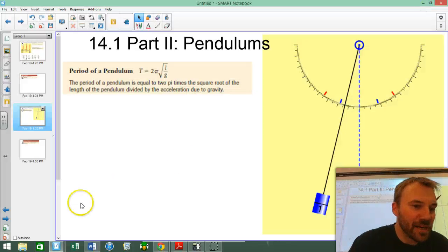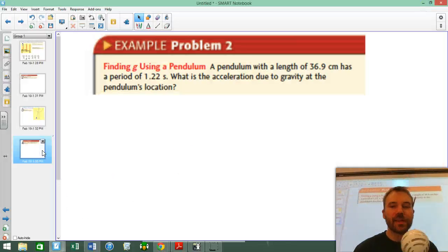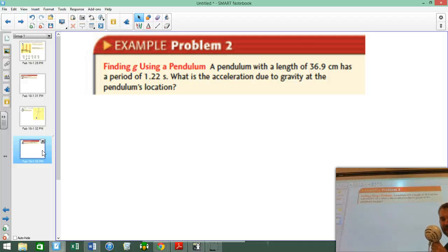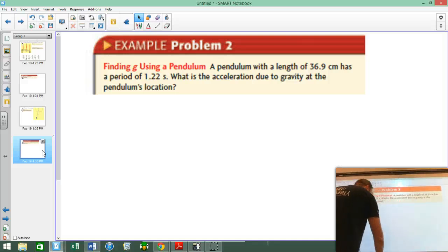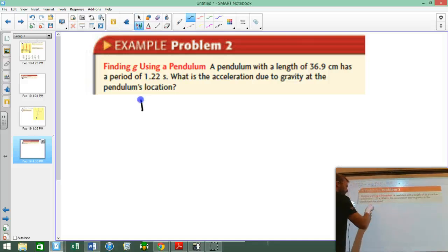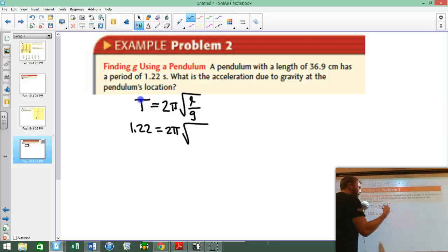It continues to do... I'll leave a link to this if you want to watch any more of it. But let's do the problem that we've got here. Problem says, you've got a pendulum of length this, and it's got a period of that. What's gravity at this location? So we're going to use this equation. This period is equal to 2 pi times the square root of L over G. We know the period is 1.22 seconds, 2 pi, and we know the length is 0.369 meters, and we're trying to find gravity.